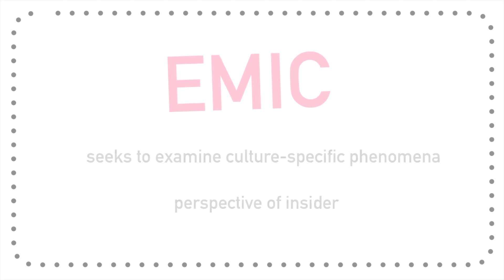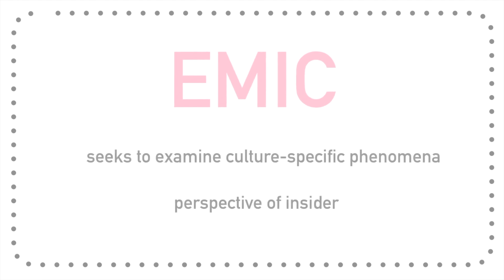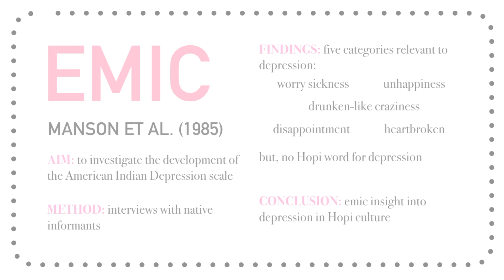Emic approaches are the opposite — they look at one culture specifically, examining distinct behaviors within unique cultures and assuming behavior can only be understood from the perspective of insiders within that culture. In 1985, Manson et al. investigated how the American Indian Depression Scale came about by interviewing native informants, especially the Hopi people. Researchers identified five translated Hopi illness categories: worry sickness, unhappiness, drunken-like craziness, disappointment, and heartbroken. The Hopi couldn't identify a word for 'depression' but related to these five terms. The 'heartbroken' category was notably different from Western depression, including symptoms like weight loss, disrupted sleep, and fatigue.